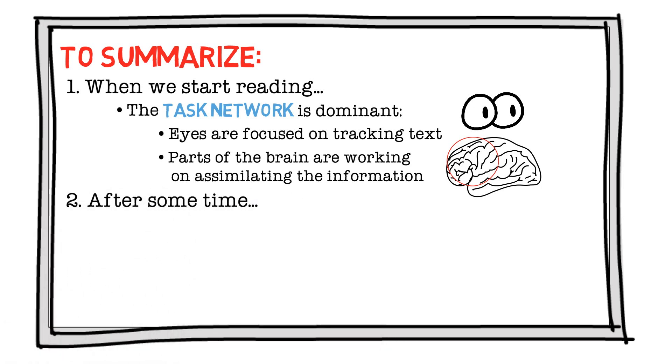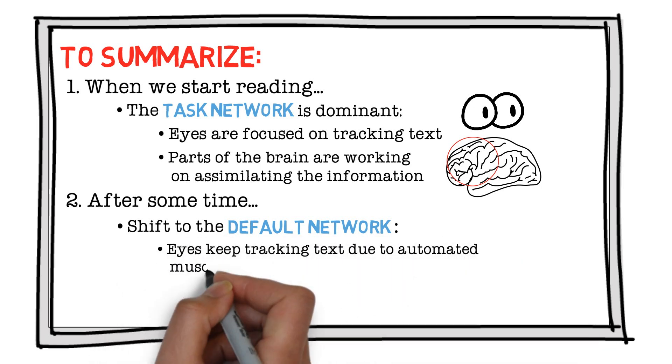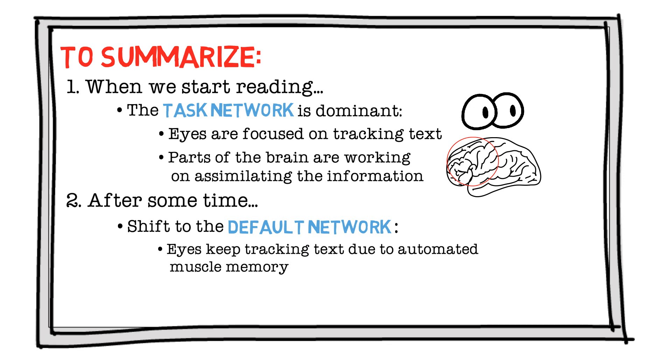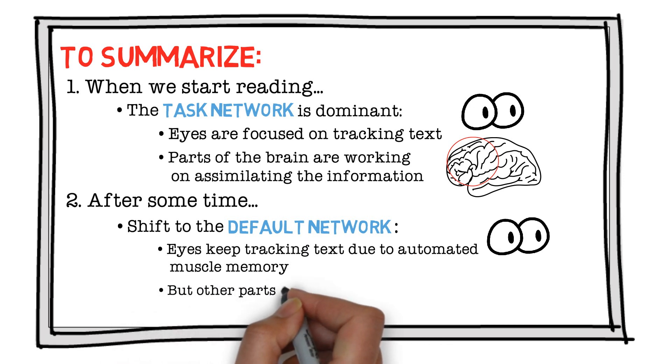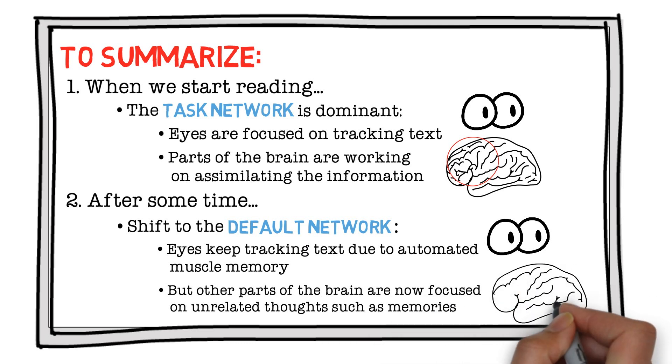After some time, our brains shift to the default network, in which the eyes keep tracking the text due to automated muscle memory. But other parts of the brain are now focused on unrelated thoughts, such as memories.